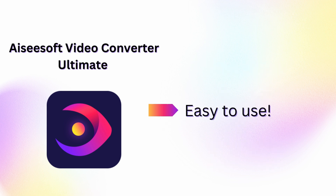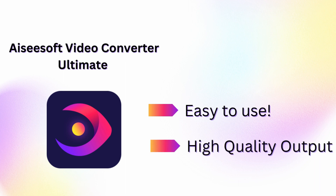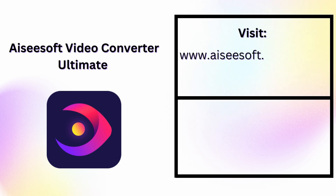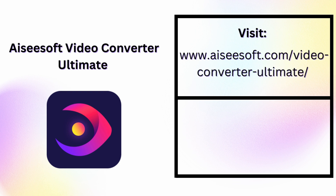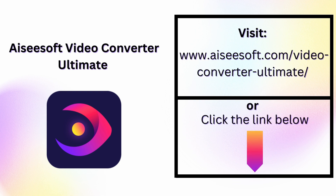You can use the trim feature to cut out all the excess and unnecessary clips on your video. With this tool, you don't need to exert much effort to edit your reaction video because it only takes a few minutes to master it. It is easy to use even for beginners, and it produces high quality output so you can rest assured that the project you do is clear and good.